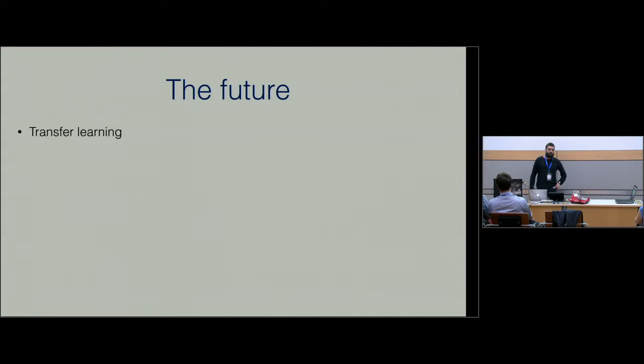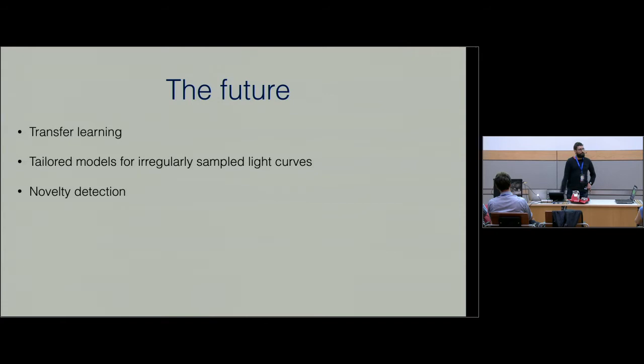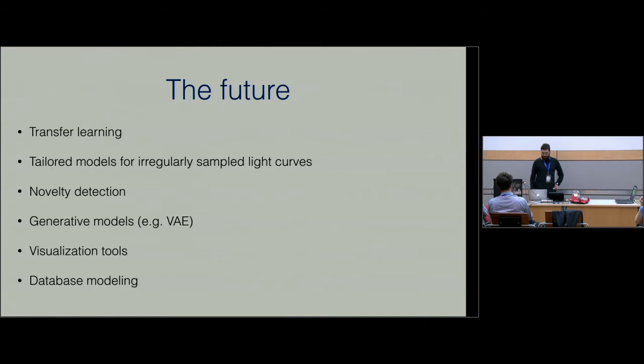What do we plan to do in the future? Transfer learning - we need to be able to transfer knowledge from one domain to the other. We need tailored models for irregular sampled light curves. We're addressing it right now but we think we can do better. Novelty detection - that's something we're working on with Pablo too, in outlier detection. That's not part of ALERCE right now but we are planning on putting it in the future. Generative models, visualization tools - the visualization team is just starting to work on this, it's brand new. And database modeling, because we need to store all the data in something such as a Cassandra database. We're working on that right now too.